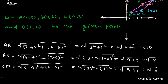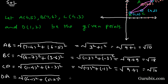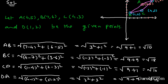Now we shall find DA = √[(4−1)² + (5−2)²] = √[3² + 3²] = √[9 + 9] = √18.